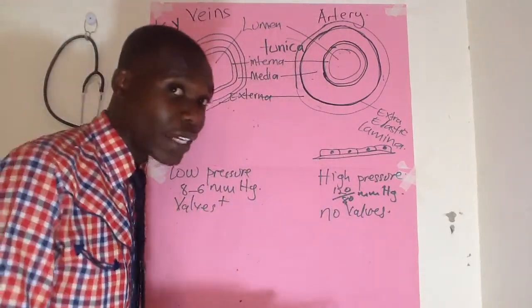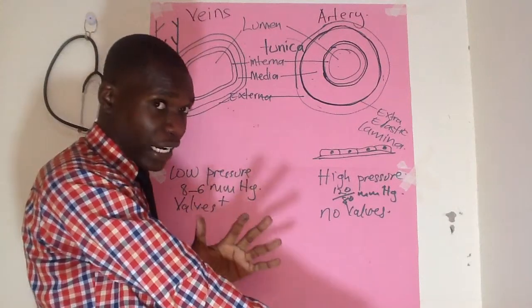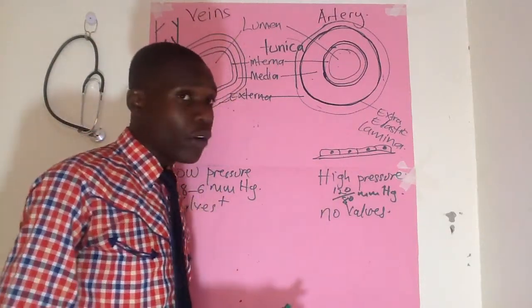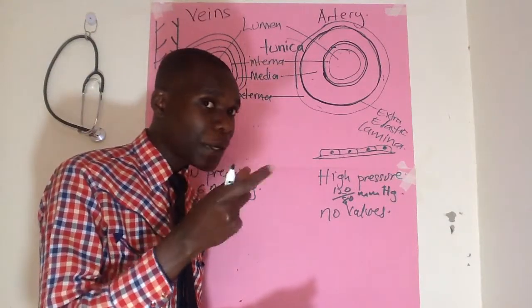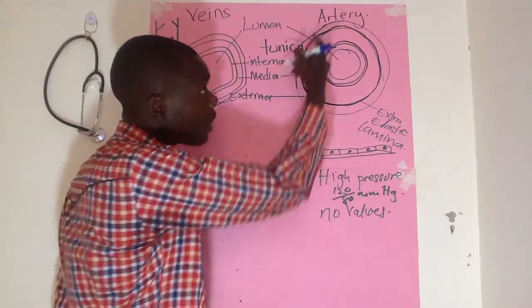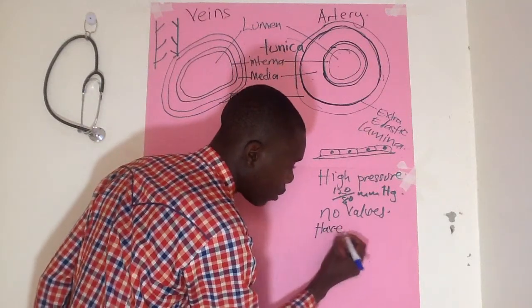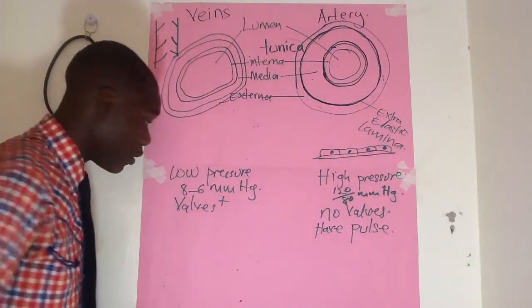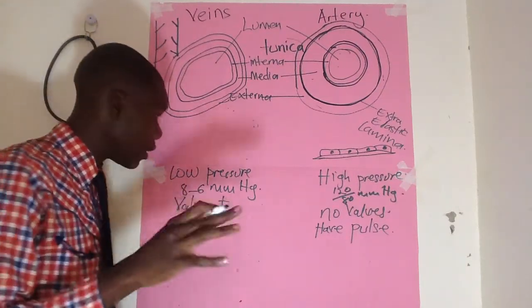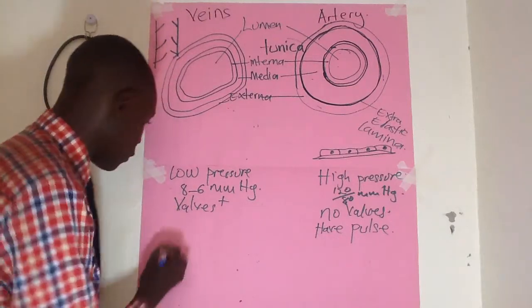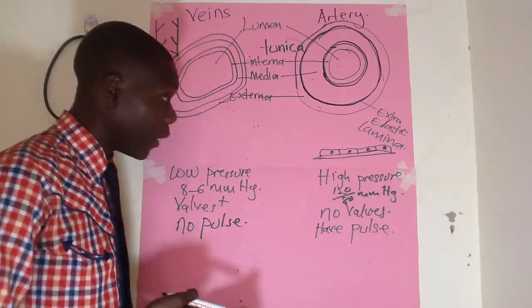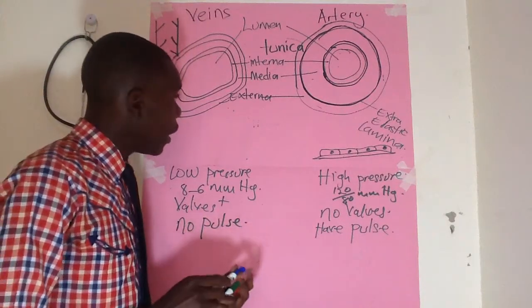Another difference: if you press on an artery — for example the brachial artery — you can feel the heartbeat, and that is what we refer to as the pulse. So in arteries we have a pulse. Whereas in the veins there is no pulse; you cannot palpate a pulse in a vein because blood is at a relatively very low pressure.